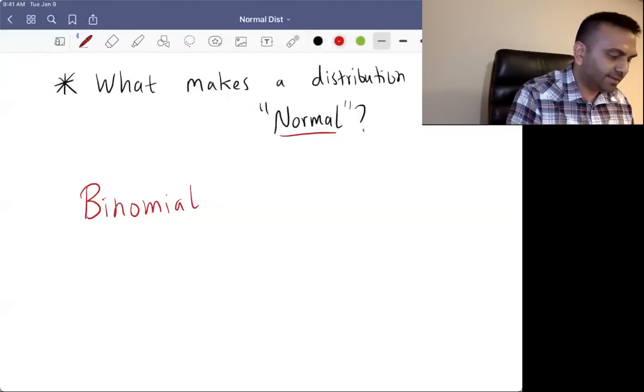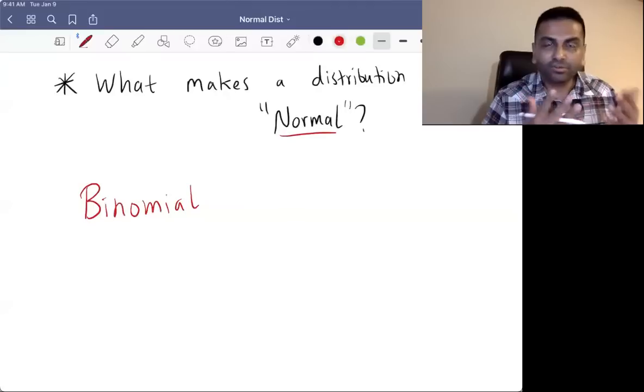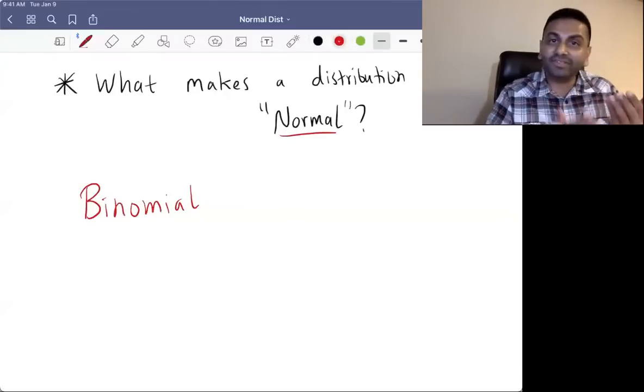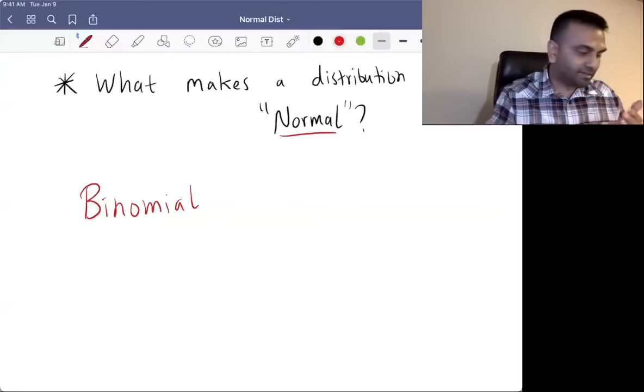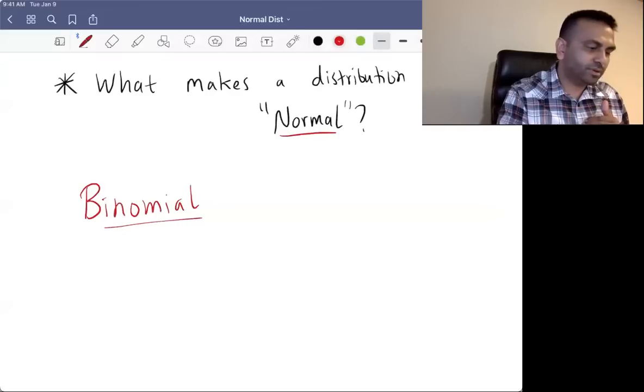For example, heads or tails, right? So since there's only one of two values, and in this case, the probabilities are 50 and 50% each. So that's what a random, that's a binomial distribution for a random variable.